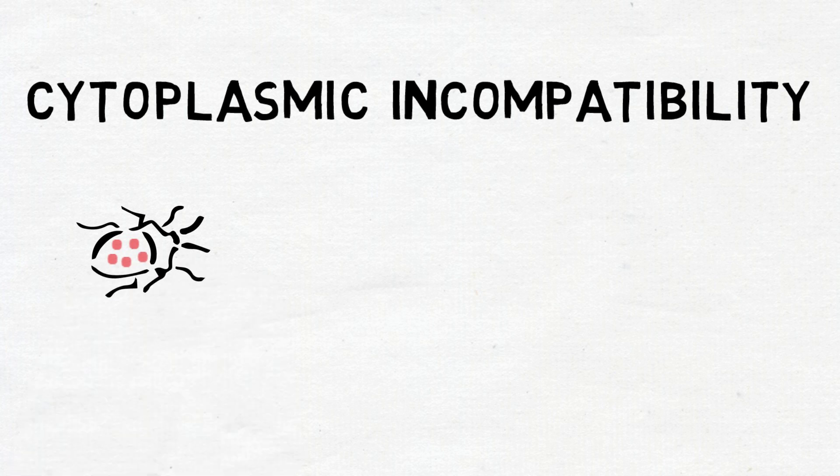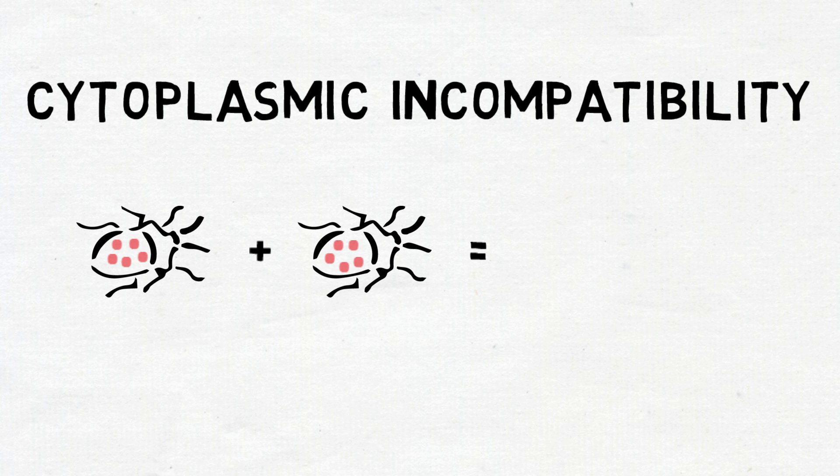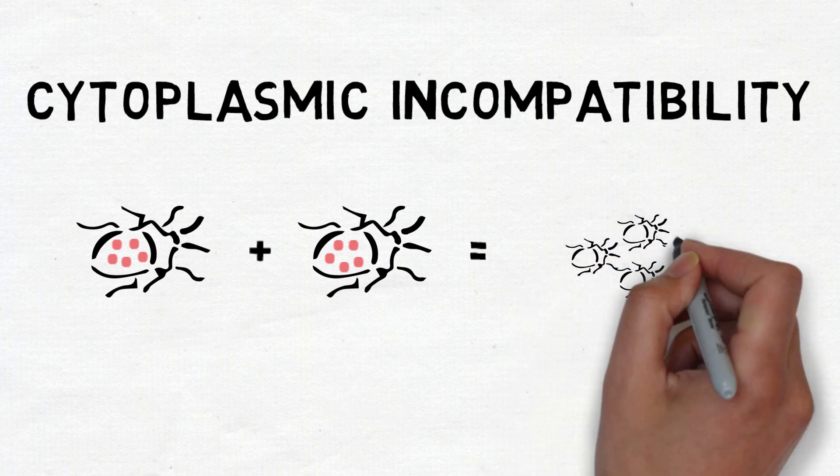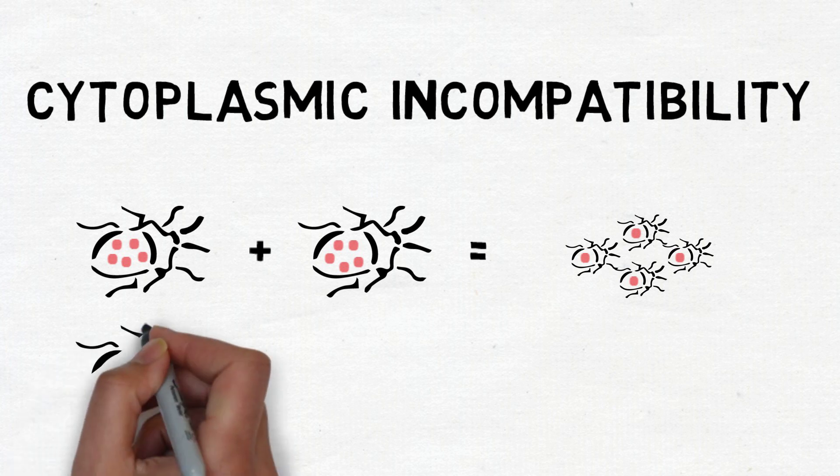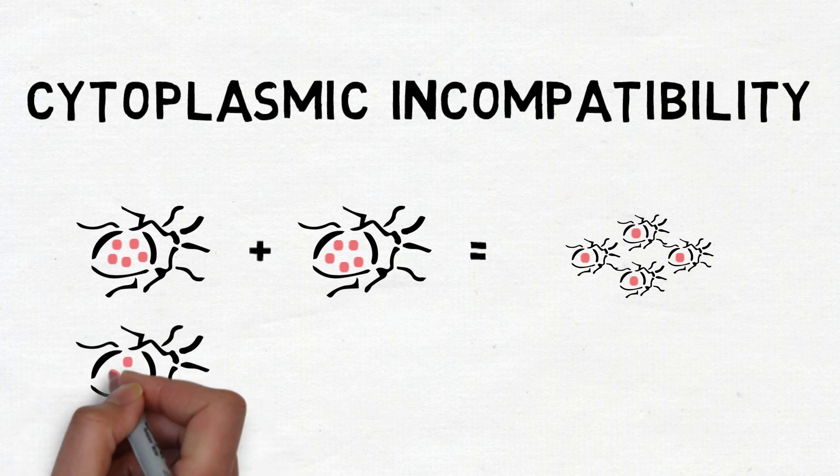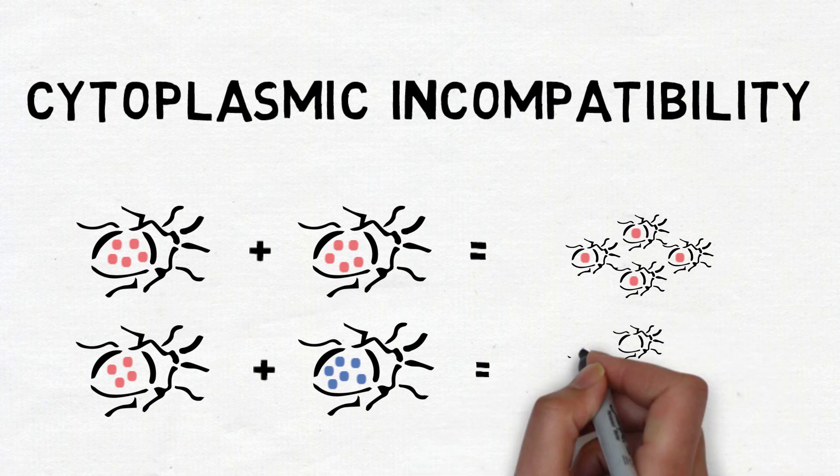If one insect is infected with a particular strain of Wolbachia and mates with another insect infected with the same strain, their offspring will also be infected. But if one insect infected with a particular strain of Wolbachia mates with another insect infected with a different strain, then the eggs they produce will not be viable and result in no offspring.